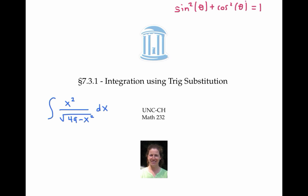The second is the related identity that involves tangent and secant. There's also a third related identity that involves cotangent and cosecant. This one could also be used in the method of trig substitution, although it doesn't come up as often as the first two.